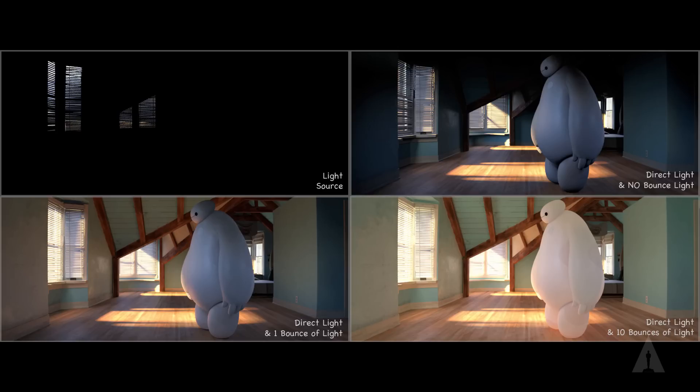So we actually had to let it go 10 bounces. Any shot with Baymax had 10 bounces of light simulated, and the environment had about five to six bounces. You can see the difference not only in Baymax, but in the richness of the environment when you let the light bounce around — that warm sunlight bouncing around really added to our imagery. Every shot in the movie had at least five to six bounces of light simulated, and any shot with Baymax was 10. That was a huge insight.